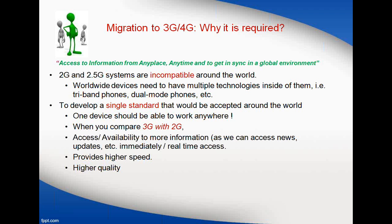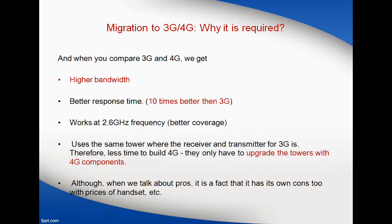Comparing 3G and 2G, as usual we know it offers higher speed and higher quality. Moving further to 4G, we have higher bandwidth and a better response time — ten times better than 3G — working at 2.6 GHz frequency with better coverage. 4G uses the same receiver and transmitter tower components as 3G, but we need to upgrade the towers for 4G. We are not going to modify the complete infrastructure, only some modifications are involved.